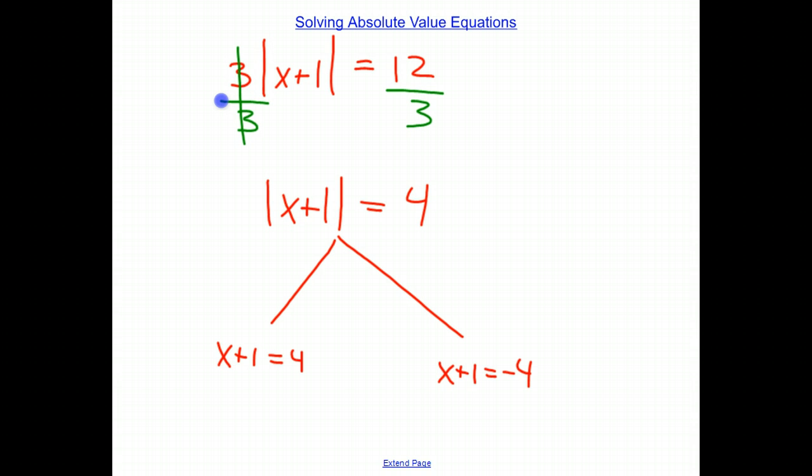And this is very basic algebra here. I'm not going to walk you through all the steps because at this point we should be able to do this. We're left with x equals a positive 3. And x equals a negative 5.